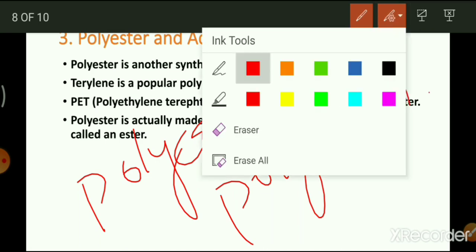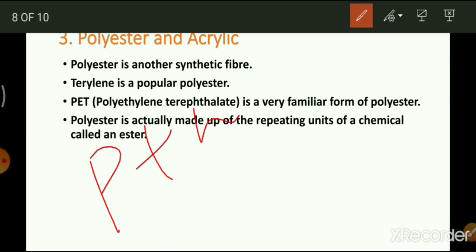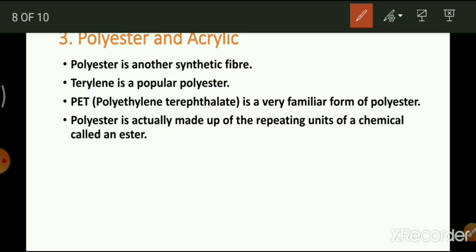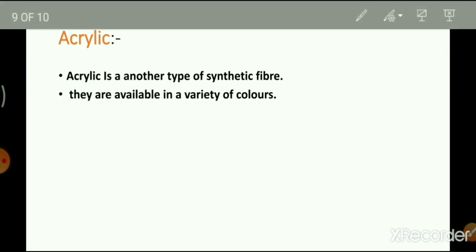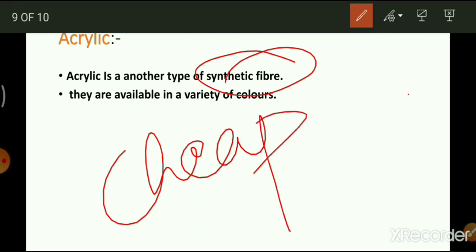Polycot is a mixture of polyester and cotton. Polywool is a mixture of polyester and wool. Acrylic is another type of synthetic fiber. Wool obtained from natural sources is quite expensive, whereas clothes made from acrylic are relatively cheap and are available in a variety of colors.